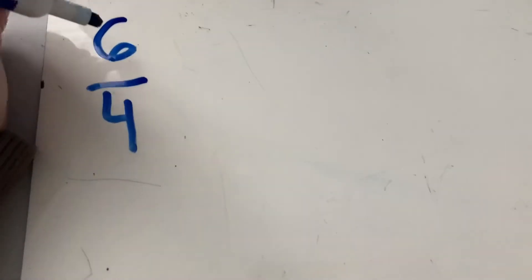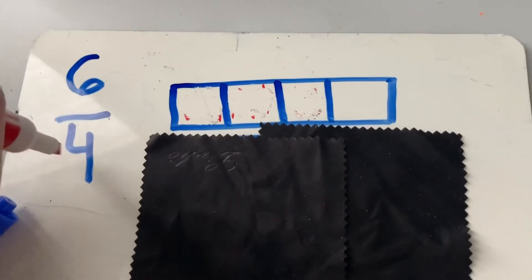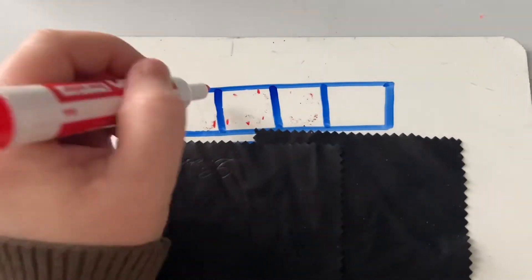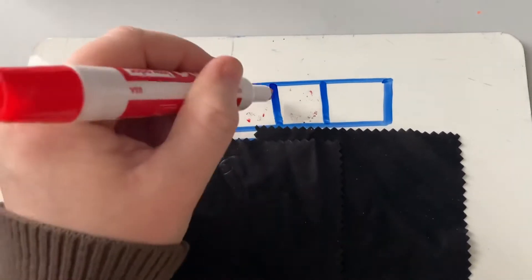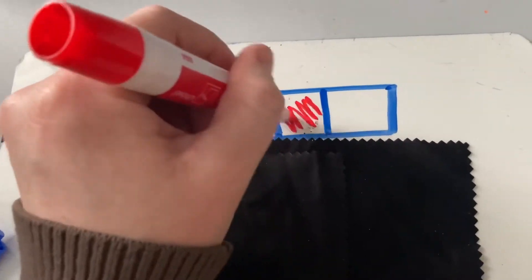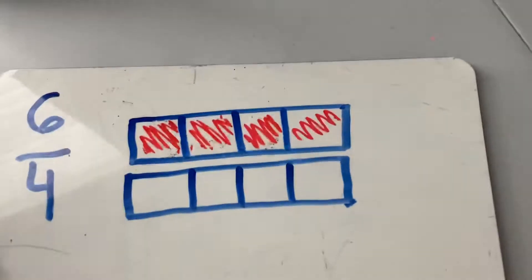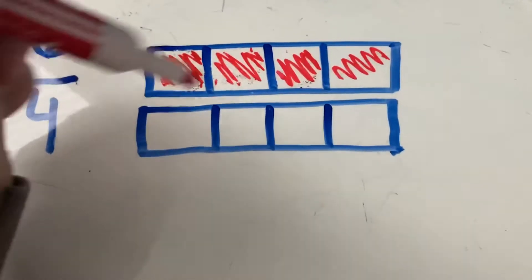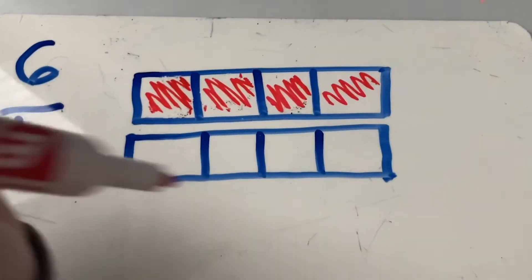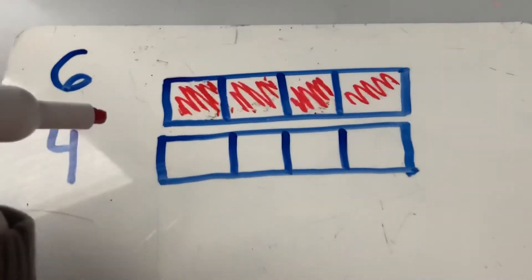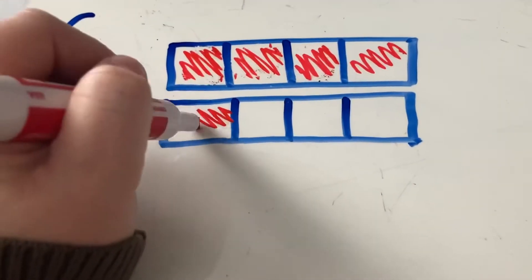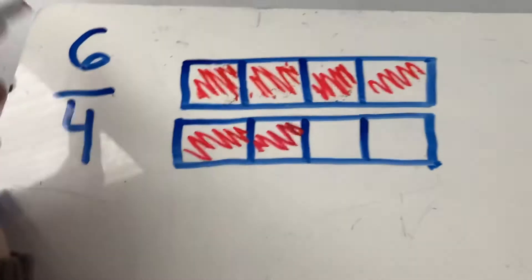What do you notice about six-fourths? Six-fourths is an improper fraction — our numerator is greater than our denominator. My whole is partitioned into four, but I need six pieces. So if I'm filling in six pieces, I notice that I don't have enough in my first bar model. I only have four, so I need a second model. This model is the same size because the size is important and partitioned the same way. Now I can add two more pieces to fill out my numerator of six.